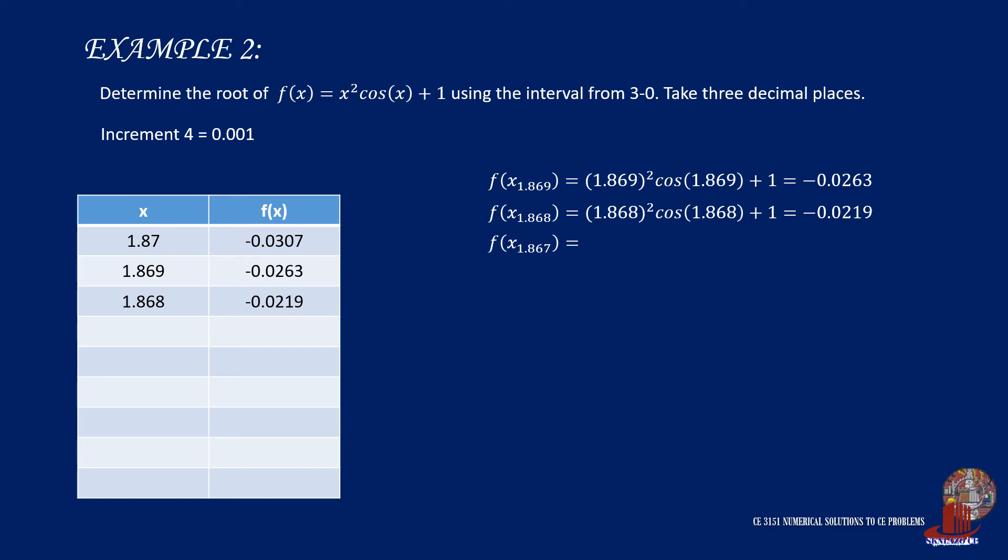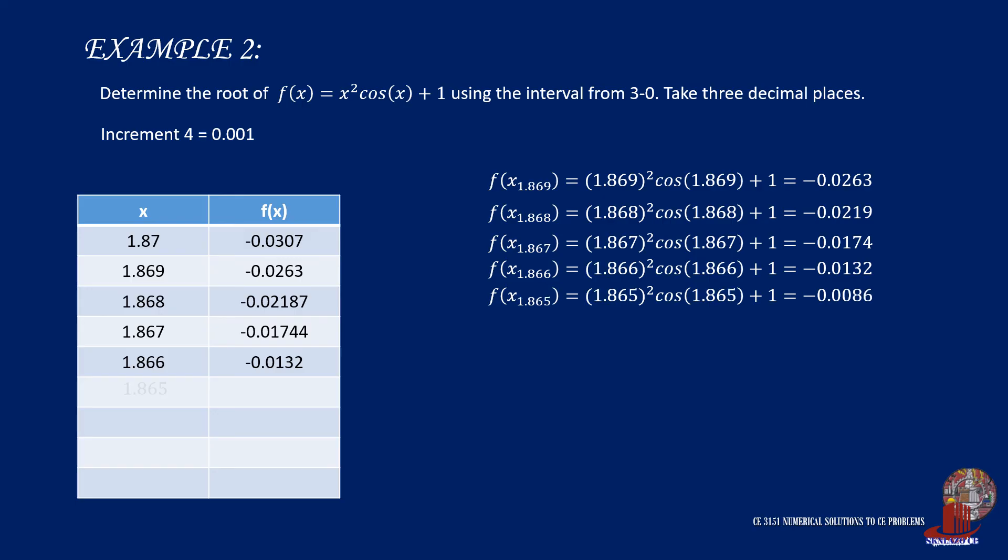Replacing x with 1.867 yields the value of the equation as -0.0174. For x equal to 1.866, the resulting f(x) is taken as -0.0132 in the negative. Yet another increment. Using 1.865, f(x) will be -0.0086.